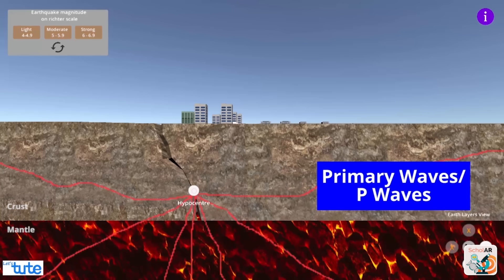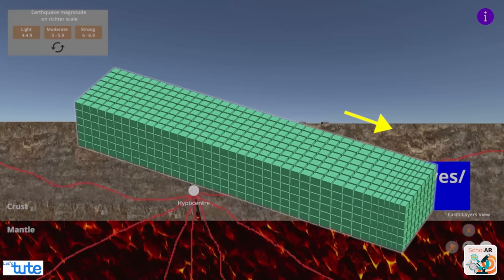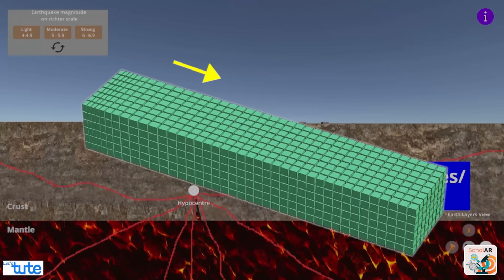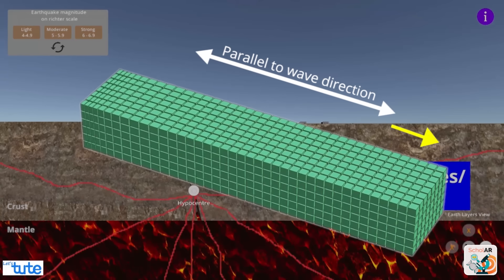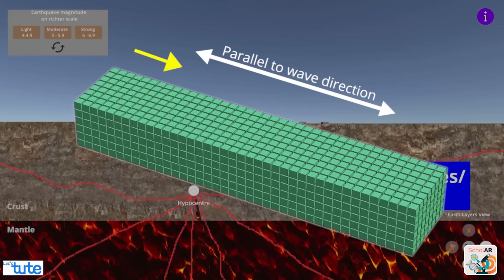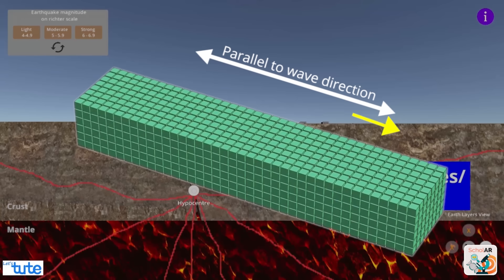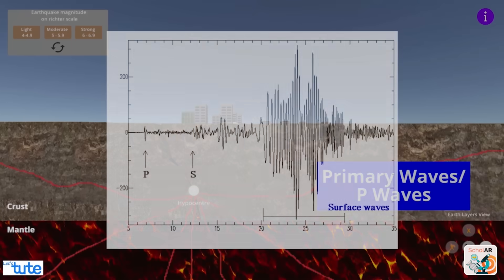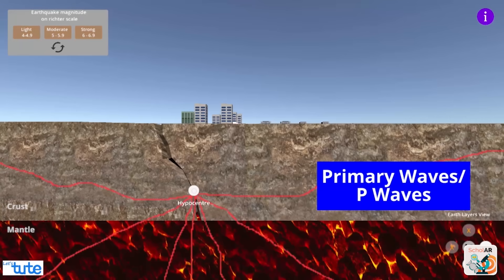From the hypocenter, waves are released called primary waves or P-waves. P-waves are seismic waves that shake the ground back and forth in the same direction and the opposite direction as the direction the wave is moving, similar to the movement of sound waves. These P-waves are the first to be recorded on a seismograph.